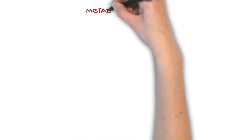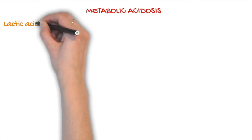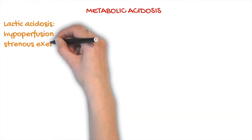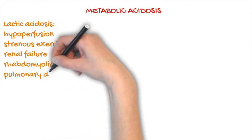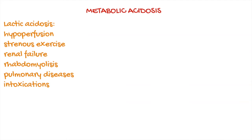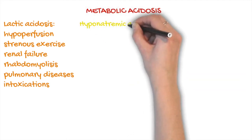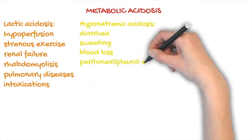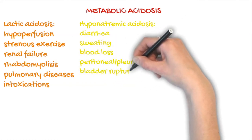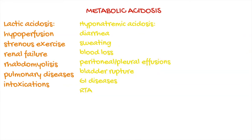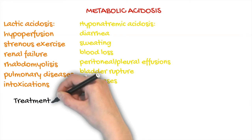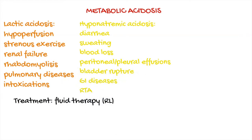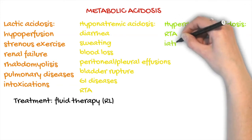Now let's see which are the most common causes of respiratory or metabolic alterations in horses, starting with metabolic acidosis. One of the most common causes is increased lactate, which occurs with poor perfusion, strenuous exercise, renal failure, rhabdomyolysis, hormonal diseases, and intoxications. A decrease in sodium is also a quite common cause of acidosis in horses, and can occur with diarrhea, sweating, blood loss, peritoneal or pleural effusions, gastrointestinal diseases, and renal tubular acidosis. Treatment for these disorders is fluid therapy with an alkalizing fluid such as Ringer's lactate.